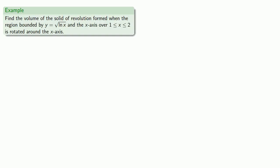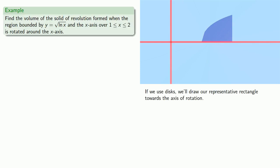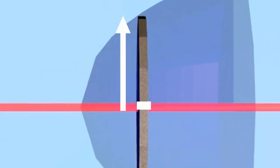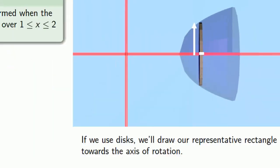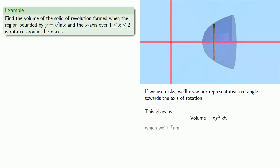First, let's graph that region. Now let's try to find the volume using disks. We'll draw a representative rectangle toward the axis of rotation, which is the x-axis, and then revolve everything around the x-axis. The radius of the disk will be our y-value. The height will be a tiny portion of the x-axis. So the volume will be π y² dx, summed from x = 1 to x = 2.